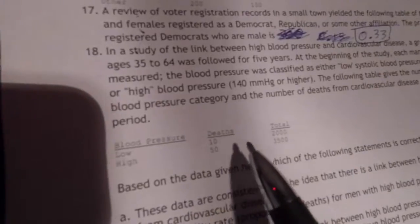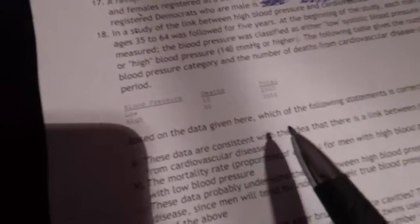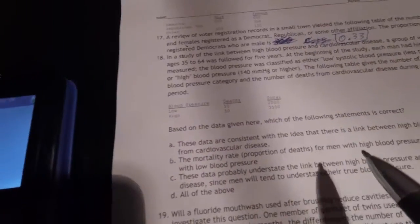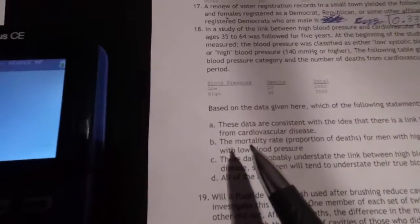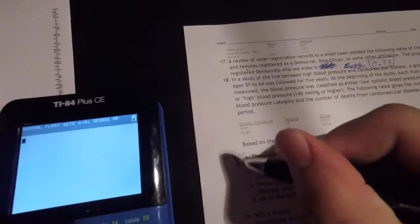Deaths for low is 10, total is 2,000. Deaths for high is 50, total is 3,500. Based on the data here, which of the following statements is correct? These data are consistent with the idea that there is a link between high blood pressure and death from cardiovascular disease. This seems true, so I'm going to star it.